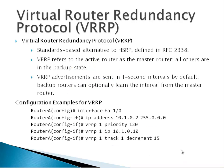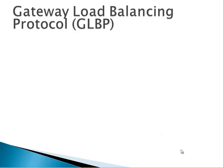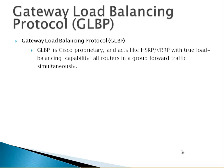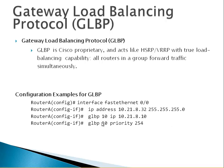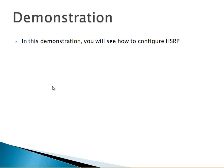Gateway Load Balancing Protocol (GLBP) is a Cisco proprietary protocol that acts like HSRP or VRRP but with true load balancing capability — all routers in the group forward traffic simultaneously. Configuration is very similar to HSRP: go to the interface, give it an IP address, and use GLBP commands starting with 'glbp' followed by the group number (e.g., 10), then the virtual router's IP address. Now we will do a demonstration on configuring HSRP.